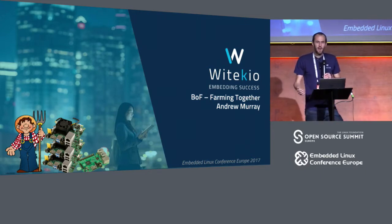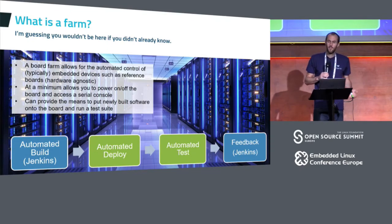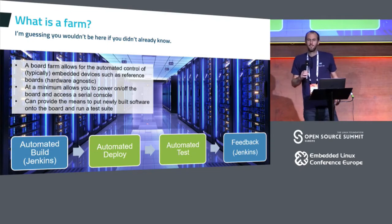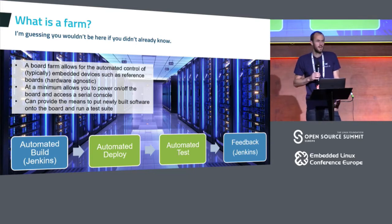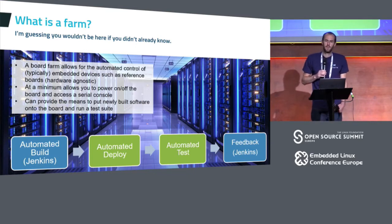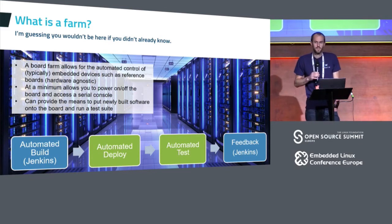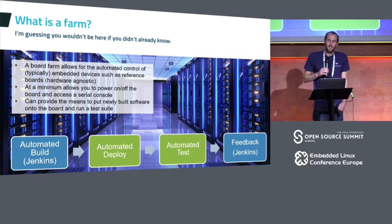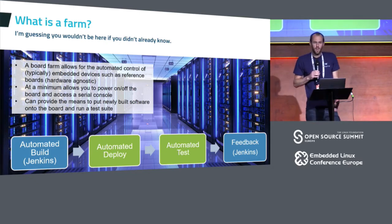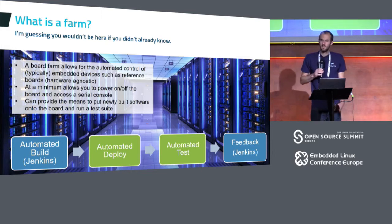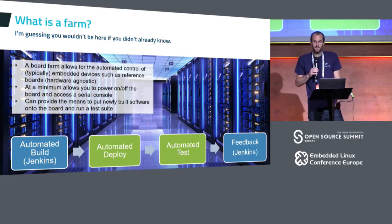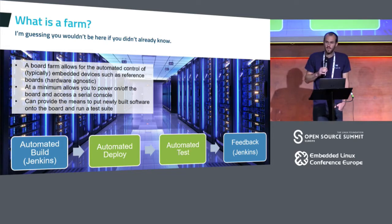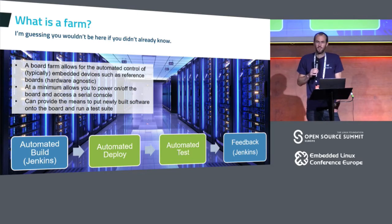I'll share my idea on what I think a farm is. In my view, a farm is some hardware - a system that allows you to interact and automate interaction with embedded devices, such as reference boards. The purpose is so that you can, in an automated way, turn on a board, put some software on it, and run some tests. The benefit is that in your continuous integration flow, you get to add two new boxes. After you've used something like Jenkins to build some artifacts, you can automatically deploy them to your board, then automatically test them, and feed the results back - usually via email notification or similar.